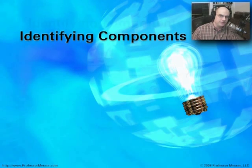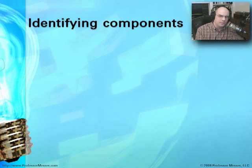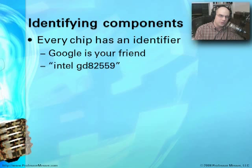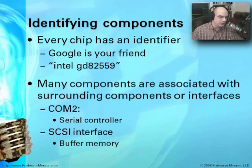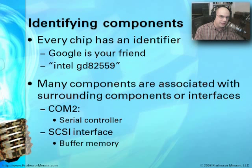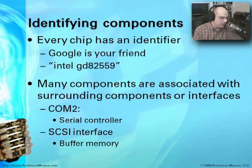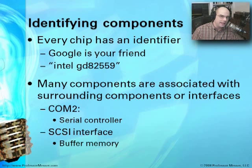When looking at a motherboard, you want to identify its components. If you see a chip you don't recognize, Google is very helpful. On my motherboard I found a chip labeled 'GD82559' — I had no idea what it was, but searching Google with the exact text in quotes identified it as likely an Ethernet controller interface chip. Generally, chips located near a particular port or interface are related to it — for example, a chip next to a serial port likely controls it, or chips next to a SCSI interface may be buffer memory.